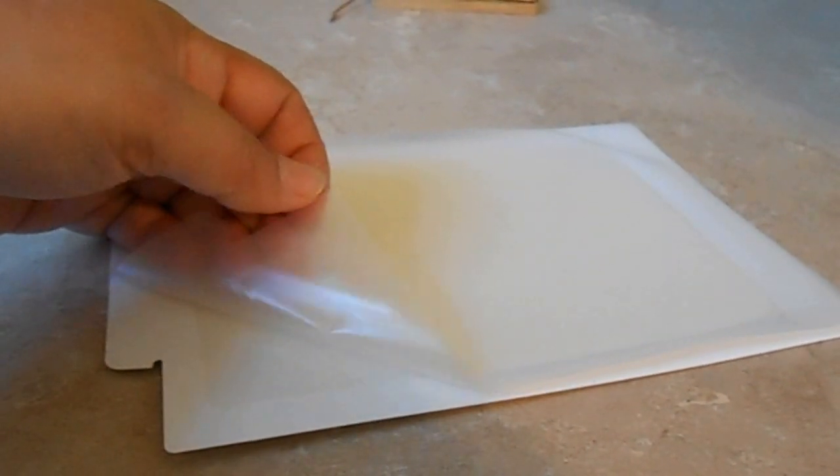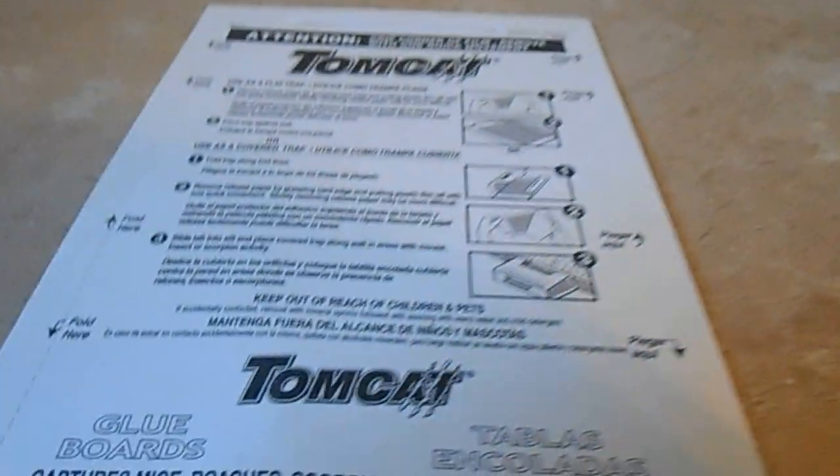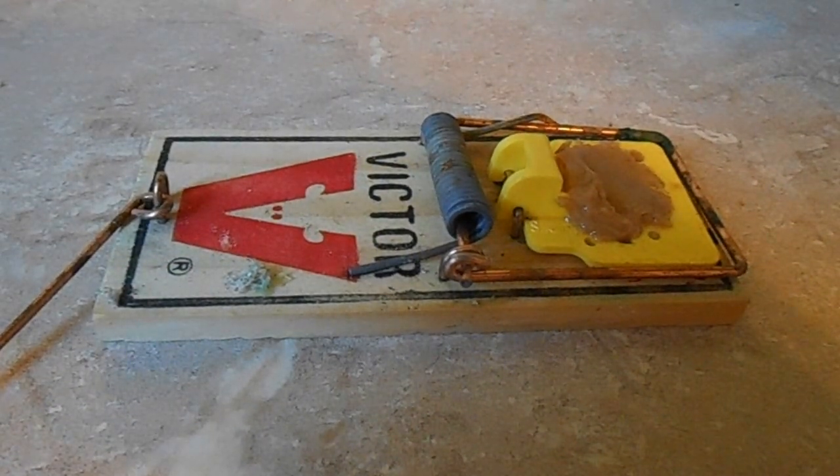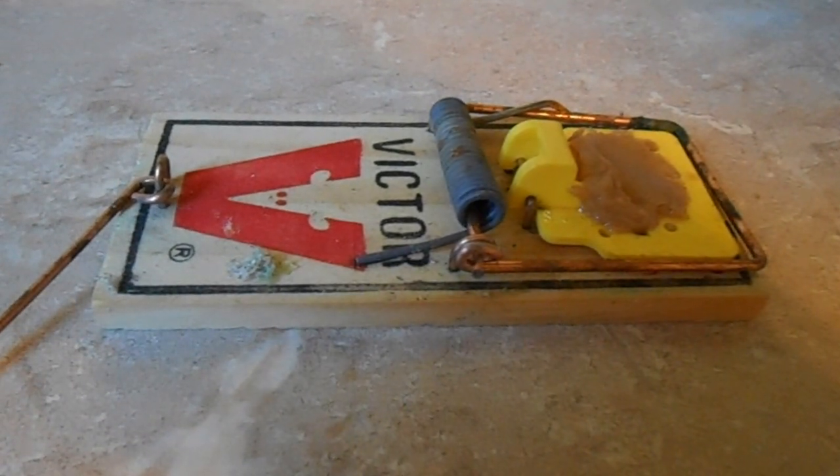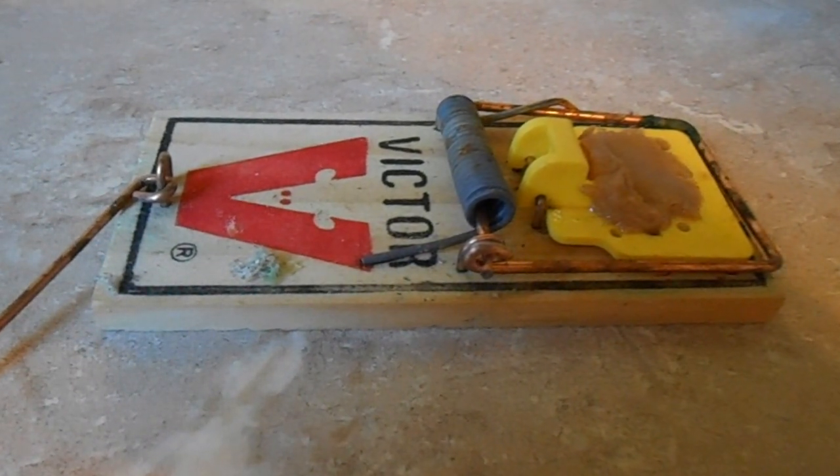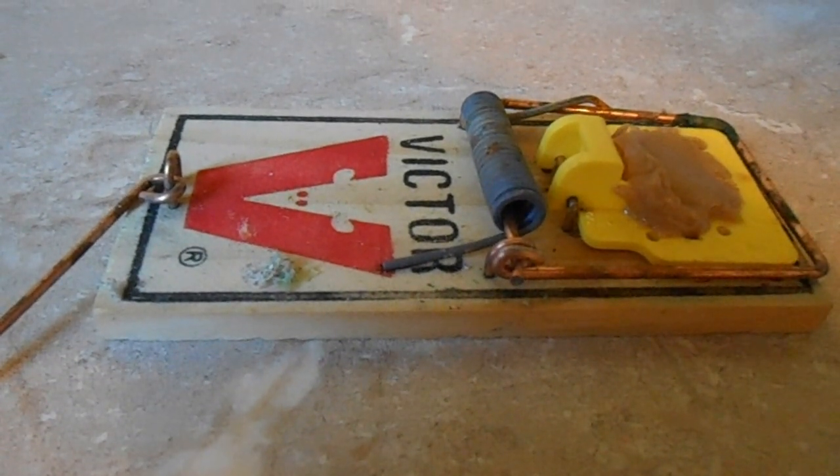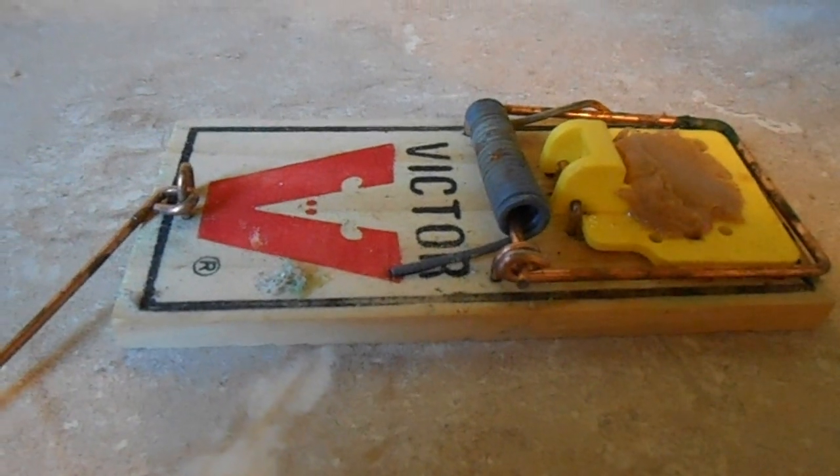So a couple of different options for mouse traps. The glue board, this one by Tomcat, and my all-time favorite - if you've got a mouse and you want to get rid of it right away, bait up an old-fashioned Victor spring-loaded mousetrap with some peanut butter or tie a nut around the end where the mouse will have to pull it out really hard, and you'll catch your mouse in no time flat.